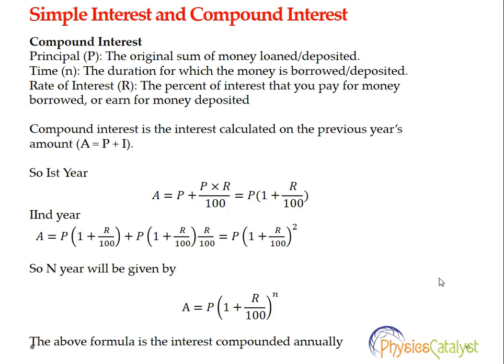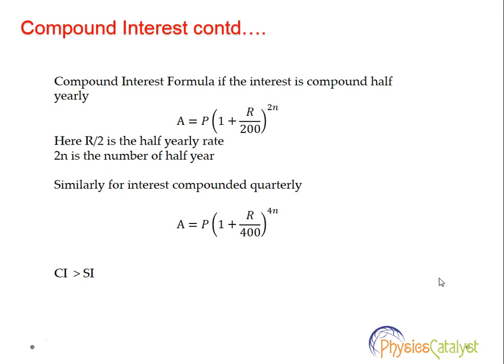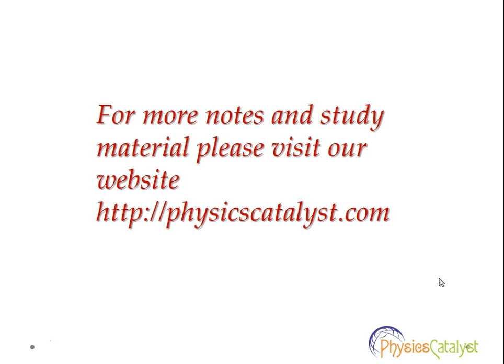Compound interest is much greater than simple interest. If the interest is compounded half-yearly, the formula is A = P(1 + R/200)^(2N), where R/2 is the half-yearly rate and 2N is the number of half-years. For compound interest compounded quarterly, the formula is A = P(1 + R/400)^(4N). Compound interest is always greater than simple interest. For more notes and study material please visit our website www.physicatalyst.com.